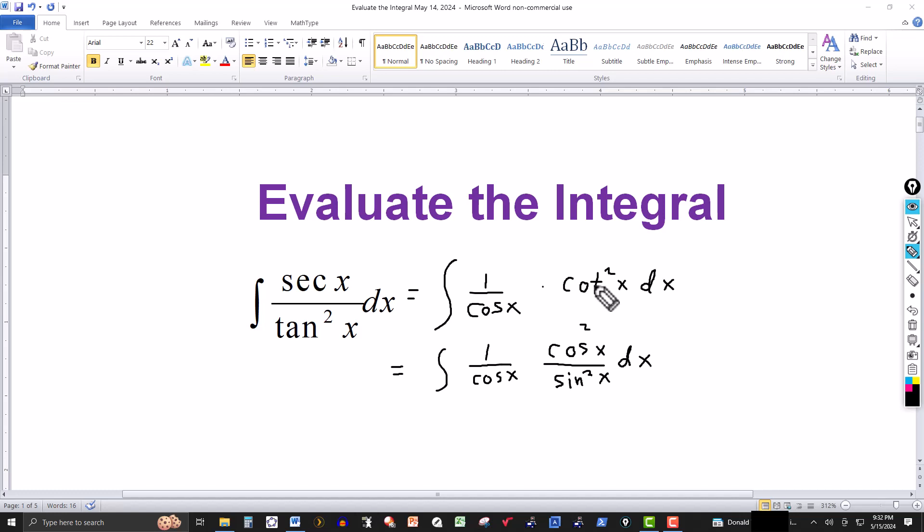So instead of cotangent squared of x, I can rewrite that as cosine squared of x over sine squared of x, and then I can cancel this cosine with 1 here, and this would just be cosine here. So then this becomes the integral cosine of x over sine squared of x.